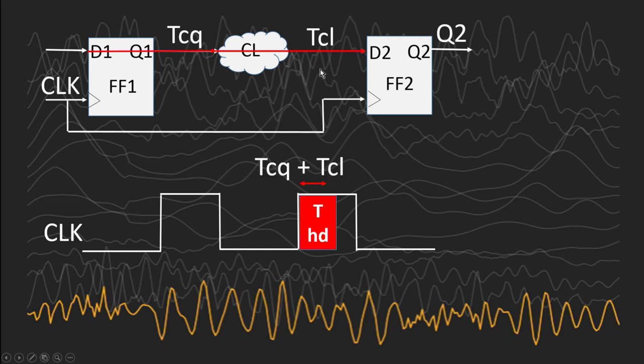Now in this case, if Tcq plus Tcl, if it is less than the hold time requirement of flip-flop 2, it is clearly a condition of hold time violation. And our flip-flop 2 will malfunction. It will go into metastable state. So its output will be unpredictable. And our complete design is not going to work.